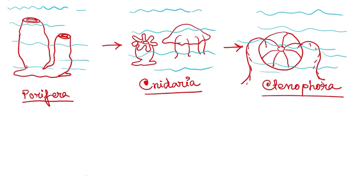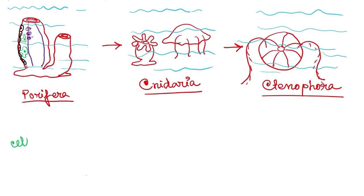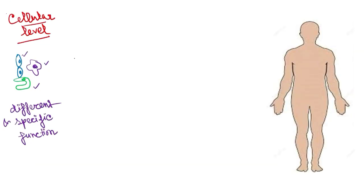The cellular level of organization is found in the most basic phylum of the animal kingdom, that is Porifera. Here we have different kinds of cells for different functions: the purple cells have a specific function, the green cells have different functions, and the black cells have different functions, but they are not forming any tissue. This is called the cellular level of organization.